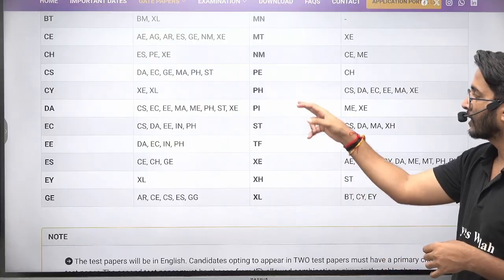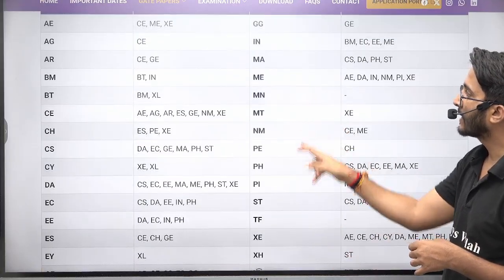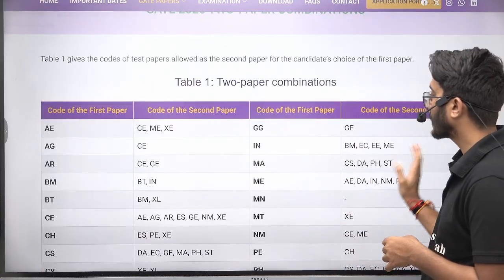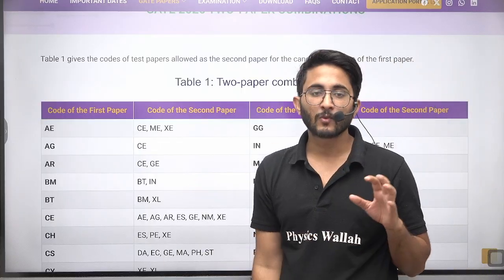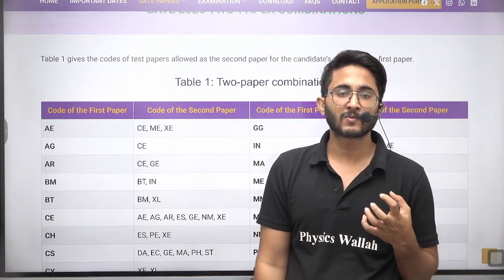Similarly available for Electrical and EC also, and you can check for PI, XE, ME, and the other papers also. So the combination is available so when you fill your GATE 2026 form that time,